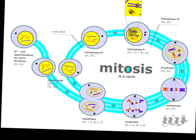Going from telophase in plant cells, where we've got the two nuclei starting to reform, we've got this little thing called the cleavage furrow forming in between what's eventually going to be the two cells. Once we get into cytokinesis, that's when the cells actually pinch in half, and you end up with two daughter cells at the end of the process.